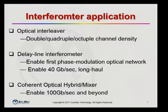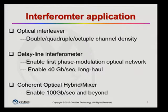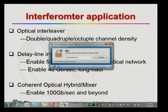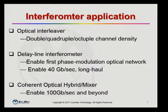Today I'm going to introduce three types of interferometric devices used very often in telecom. The first one is the optical interleaver — this device can double, quadruple, or octuple channel density, meaning you can achieve up to eight times the fiber transfer capacity. The second family is called the delay line interferometer, used in phase-modulated optical networks, which enables data transfer rates from 10 gigabits per second up to 40 gigabits per second. The third is the coherent hybrid or mixer, which enables 100 gigabits per second or beyond — in a lab you can demo 400 gigabits per second per channel.